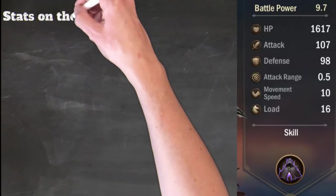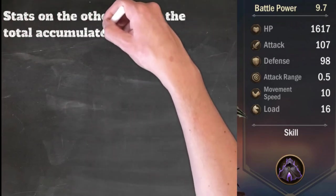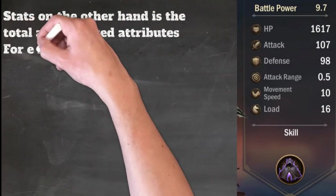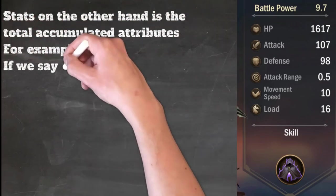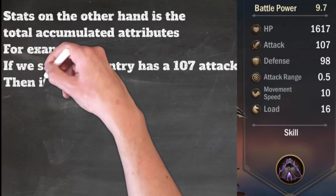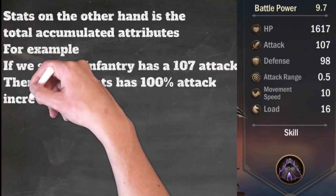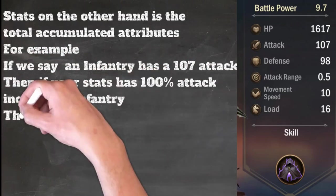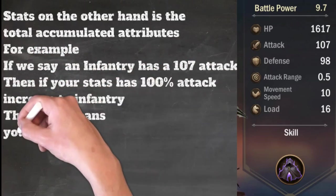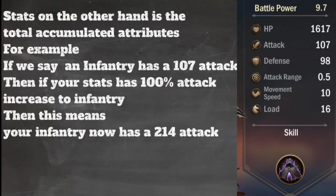Stats, on the other hand, is the total accumulated attributes. For example, if an infantry has 107 attack, and your stats has 100% attack increase to infantry, then this means your infantry now has 214 attack.